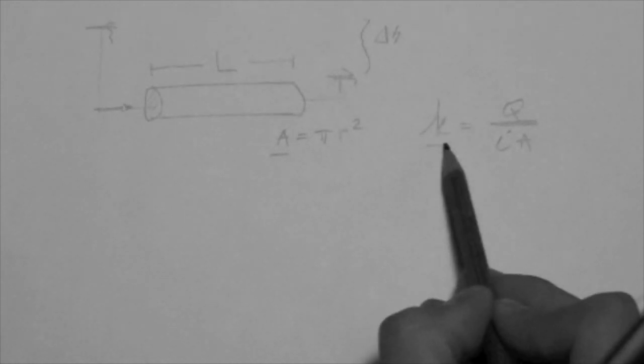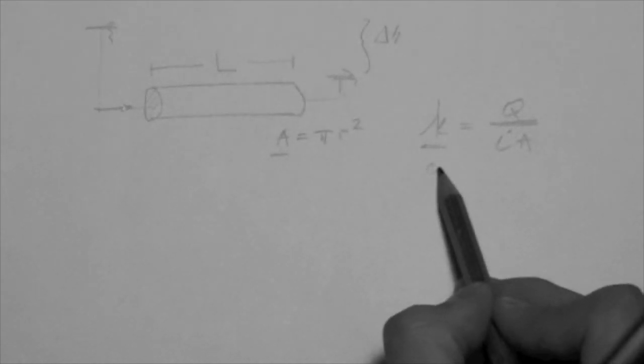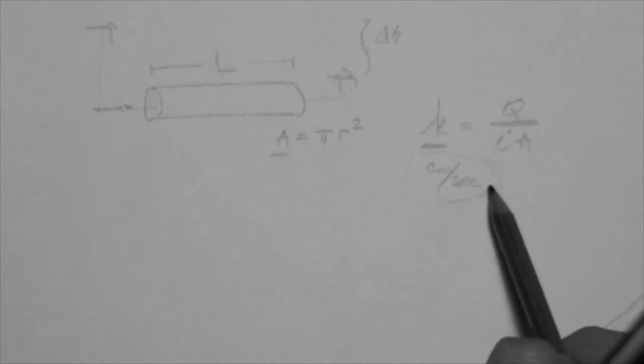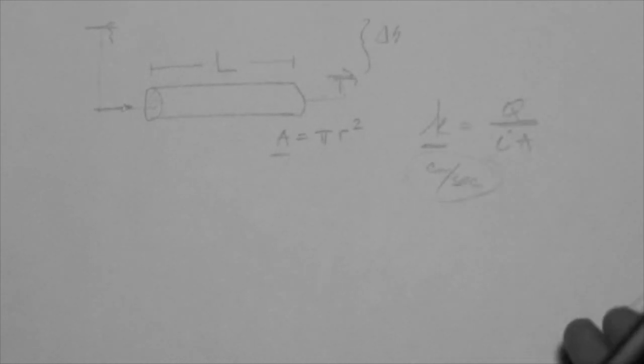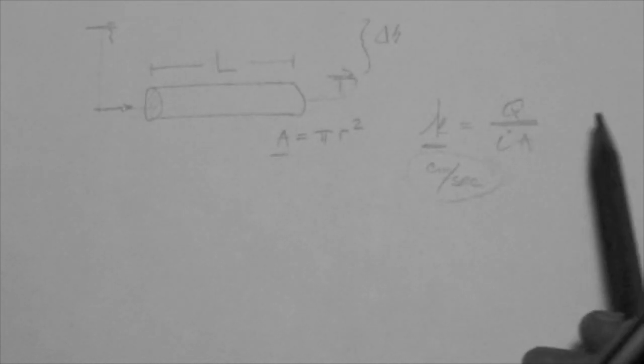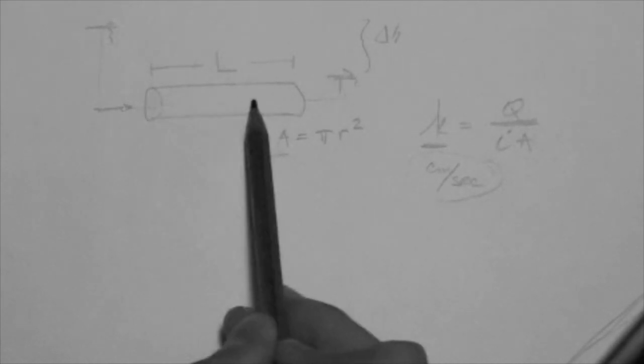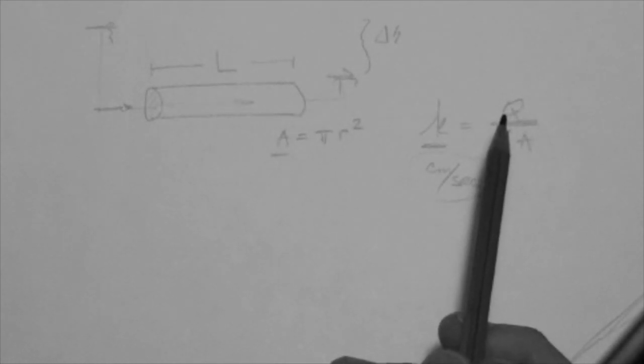We said that K was in units, or it's reported in units of cm per second, like a velocity, but it's not a velocity. What we would like to know is what is the fluid velocity as it flows through the soil.